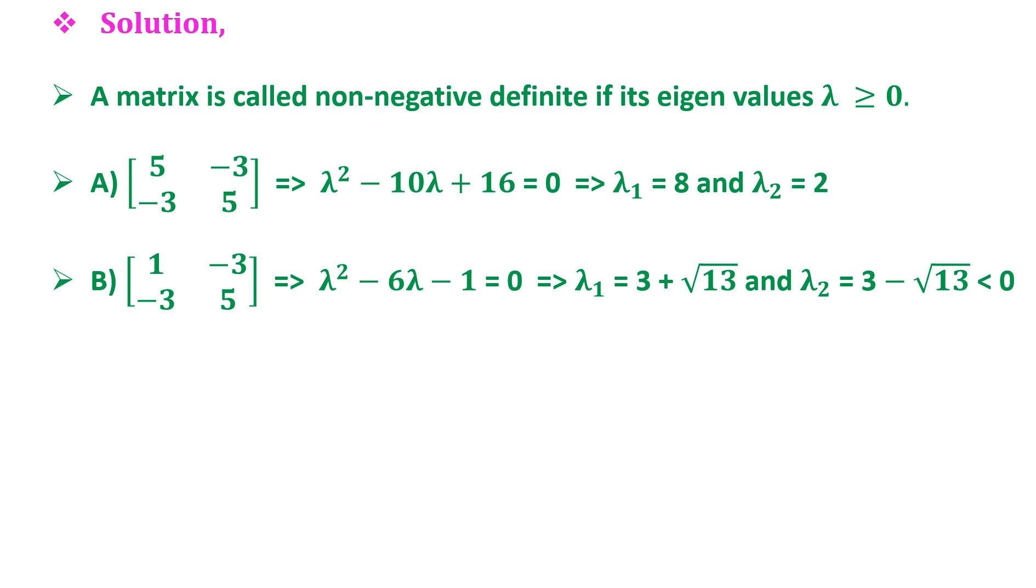And similarly for option C, the equation again is λ² - 6λ - 1 = 0, which again implies that λ₂ = 3 - √13 is less than 0. So option C is also incorrect. Hence the correct answer is option A.